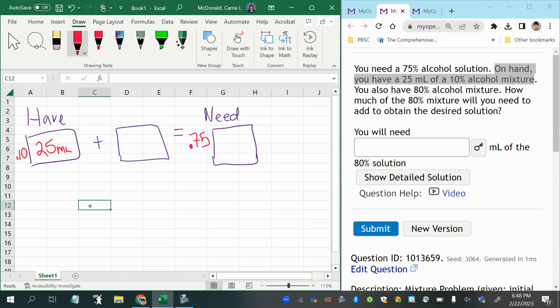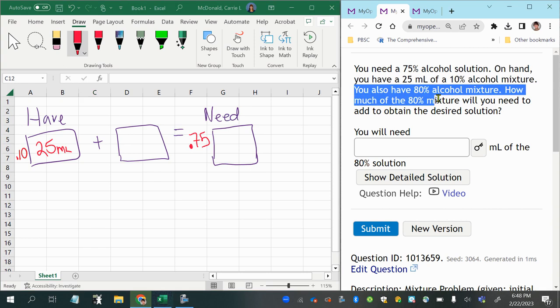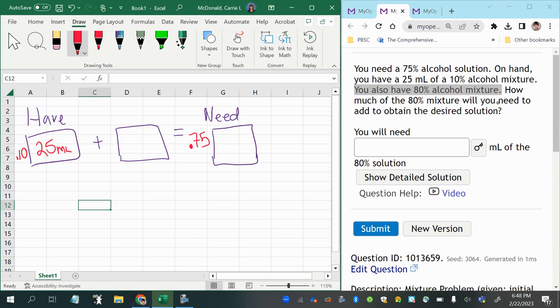And then I also have 80% alcohol mixture. But here it does not tell me the number of milliliters. So what I'm going to do is I'm going to put 0.8 for 80%. That's going to be multiplied times this unknown amount of milliliters.